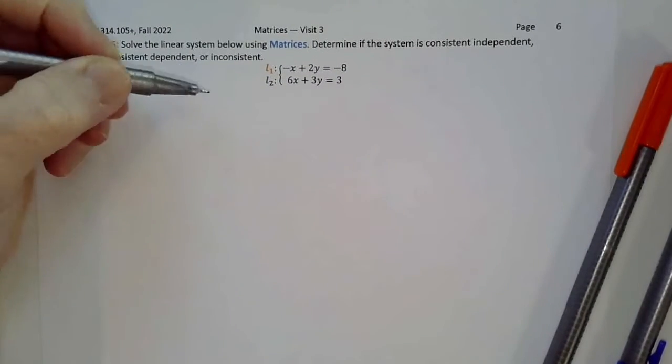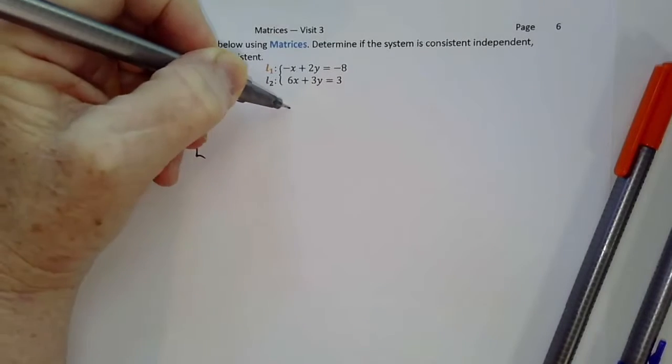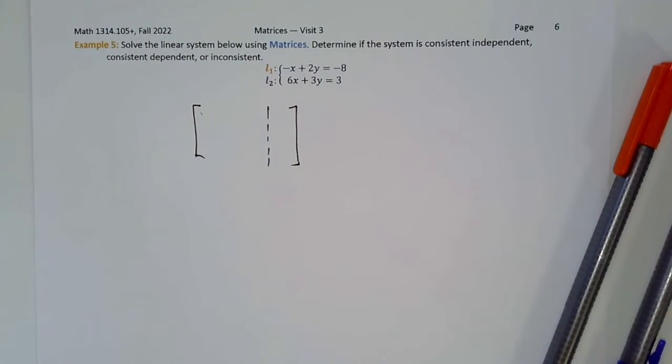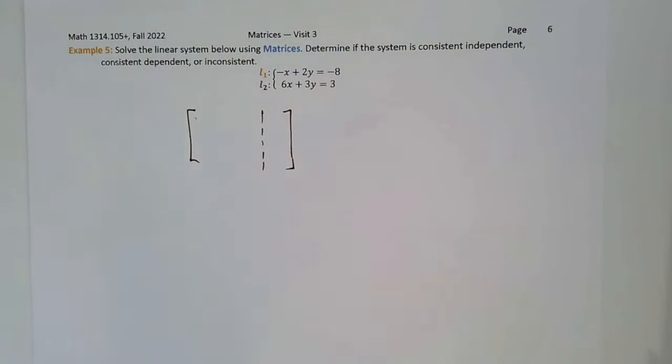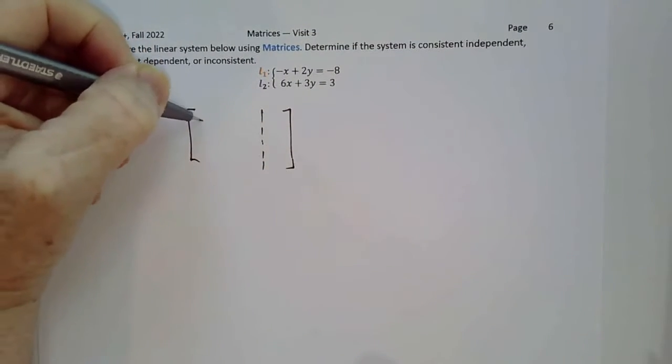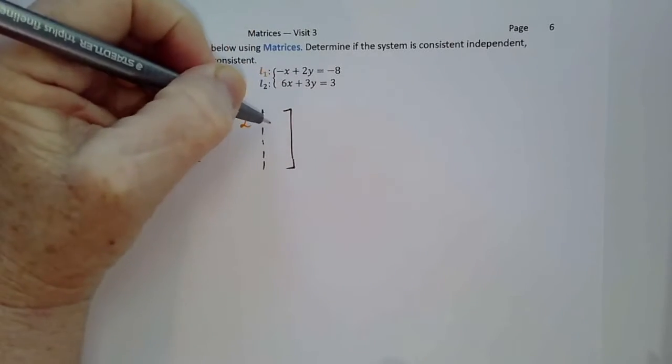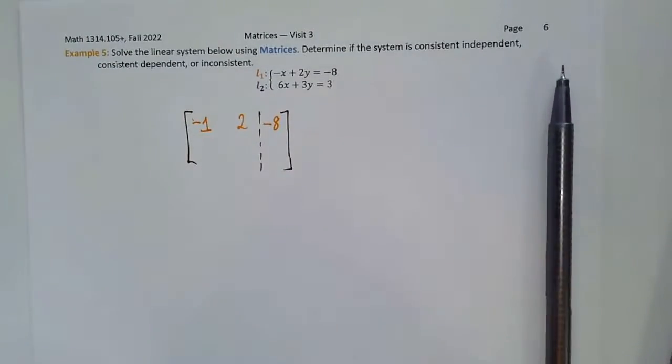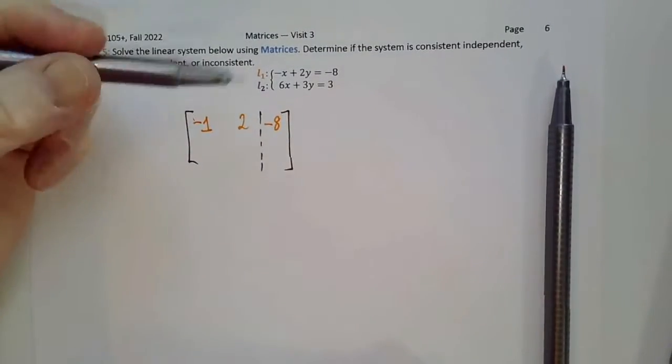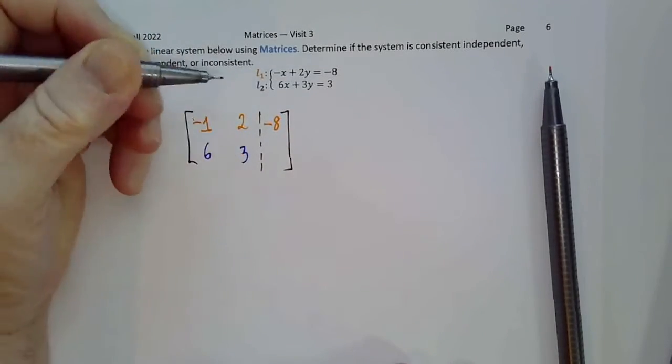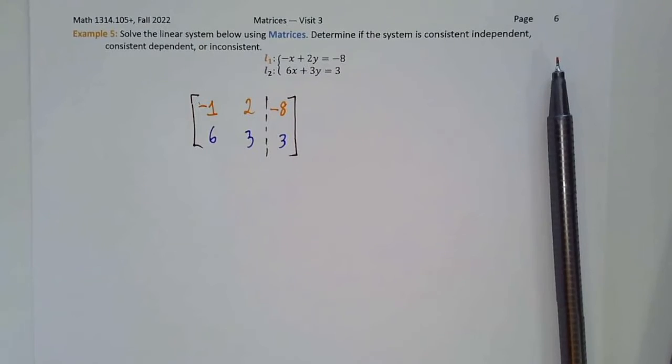Our initial matrix will have the coefficients of x and y on the left side of this dashed line, negative 1 and 2. On the right side, we'll have the constant negative 8. The second equation is 6x, so 6, plus 3y, so 3 equals 3.